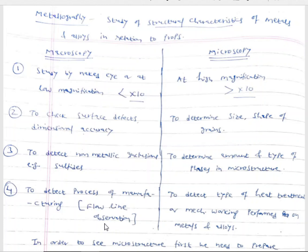Under the head of metallography we can study two kinds of structures: the first is called macrostructure and the second is called microstructure. Accordingly, it has been divided into two classes — macroscopic examination and microscopic examination. In macroscopic examination, the study of structural characteristics is done by the naked eye, plain eye, or unaided eye — without taking help of any external device. Or, if a microscope is used, the study is made at magnification less than 10.